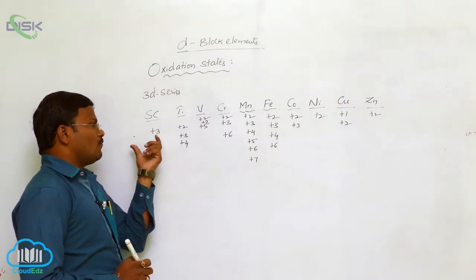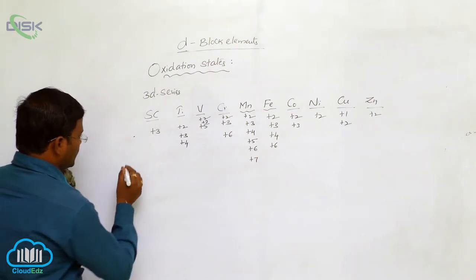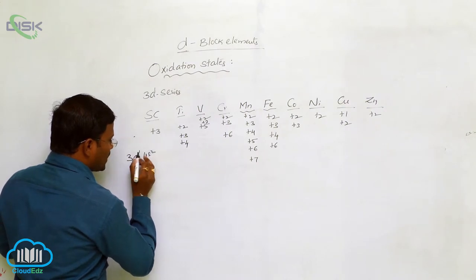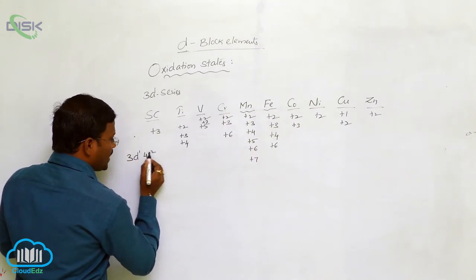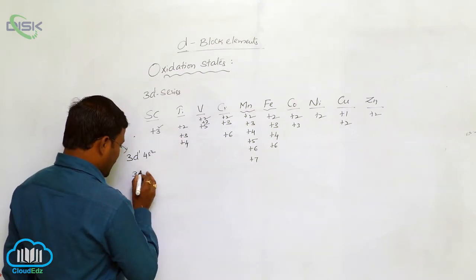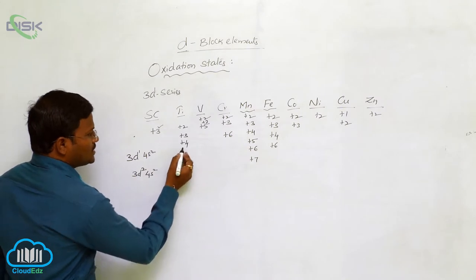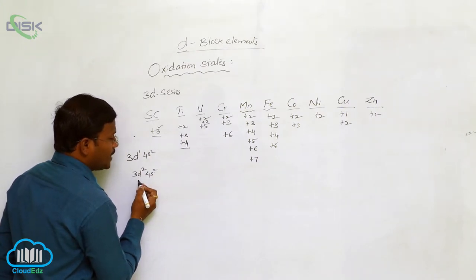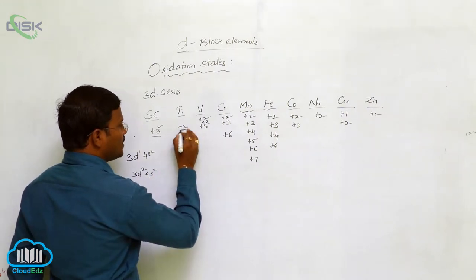Why does scandium exhibit a +3 oxidation state? In its valence orbit, the electron configuration for scandium is 3D¹ 4S². When scandium loses 3 electrons — 2 electrons from the s-orbital and 1 electron from the d-orbital — it acquires a +3 ionic form. For titanium, the configuration is 3D² 4S². When it eliminates 2 electrons from the s-orbital and 2 electrons from the 3D orbital, it exhibits +4, while loss of only s- or d-orbital electrons gives +2.